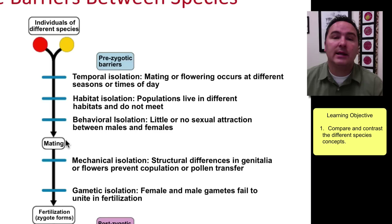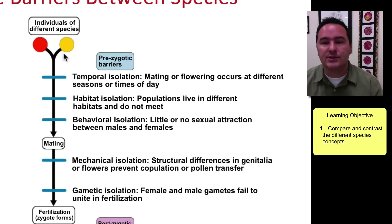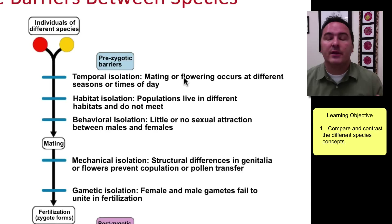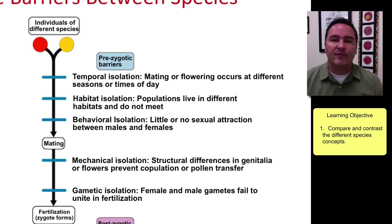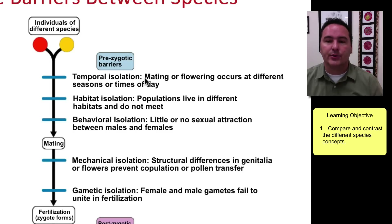Among the prezygotic barriers, three can occur before mating even takes place. The first is temporal isolation — the two individuals are simply not reproductively active at the same time. For example, flowers could be living in the same field, but if one flowers only in May and the other only in June, cross-fertilization will not occur.